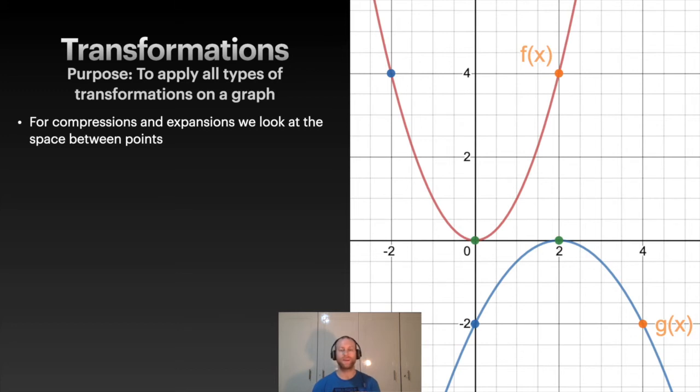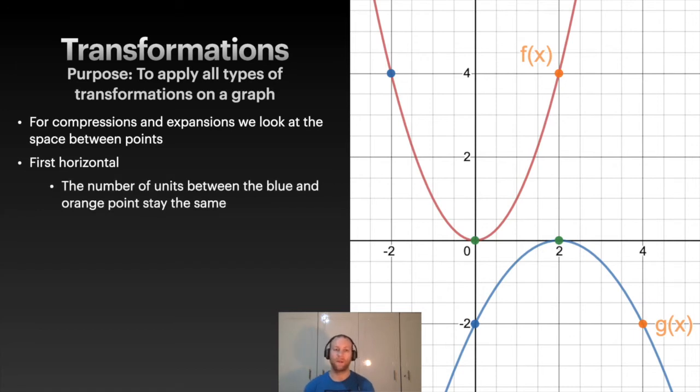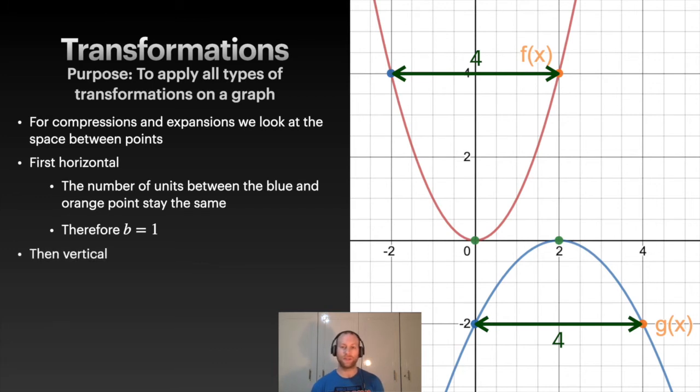Now we just need to find a and b. For expansions and compressions, we need to compare points. For horizontal, we're going to look at the blue and orange dots and see what happens to them. For f(x) there's a domain of four between them, and with g(x) it's the same. Notice between the blue and the orange dot, both of them are four units, so therefore nothing changes horizontally. It's going to stay as one.